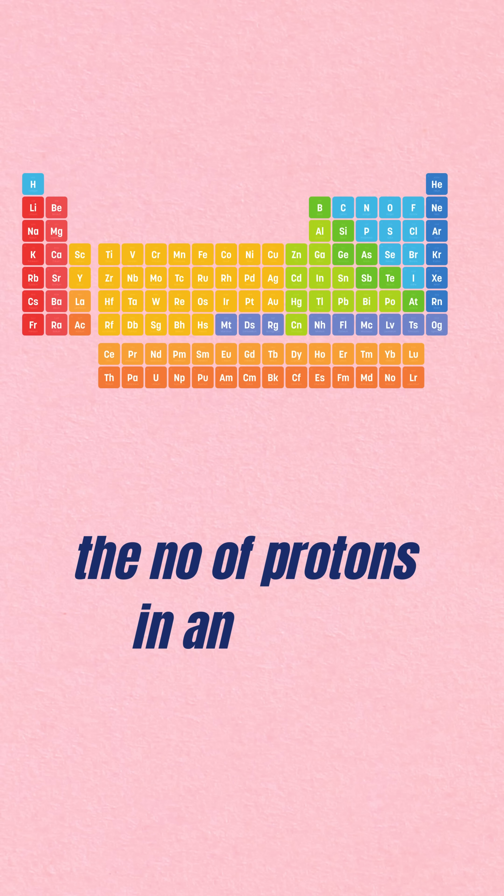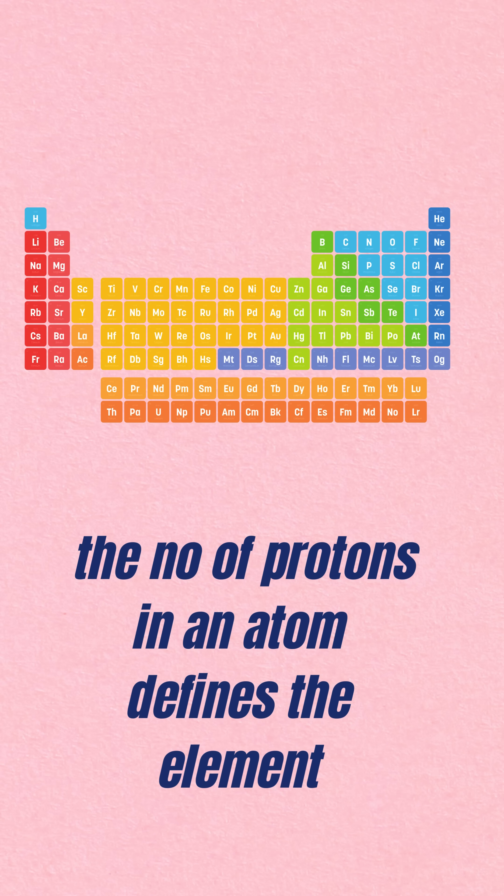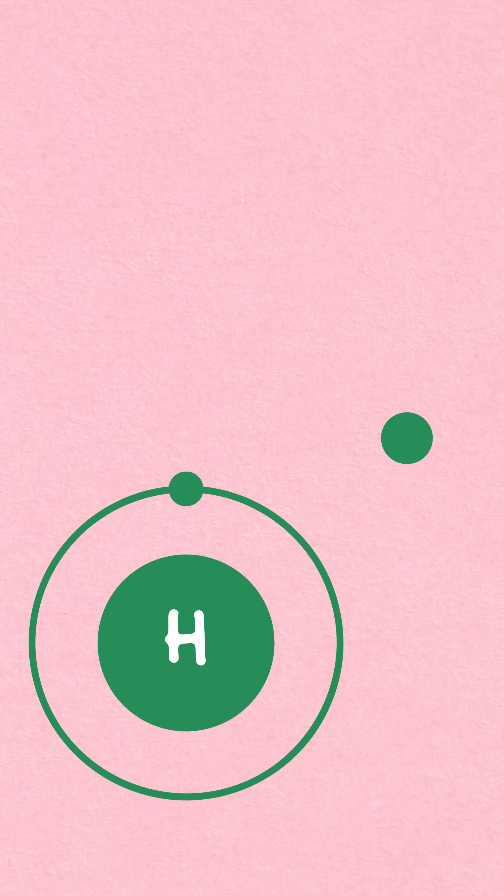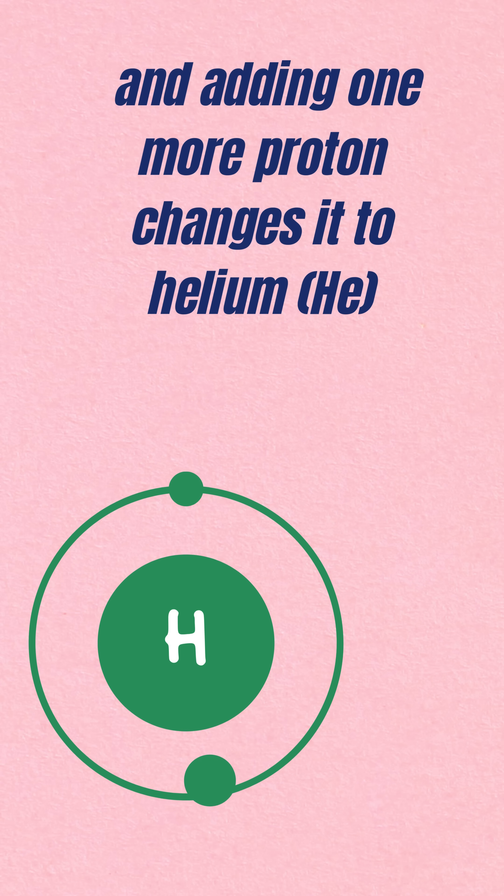The number of protons in an atom defines the element. For example, hydrogen (H) has one proton, and adding one proton changes it to helium (He).